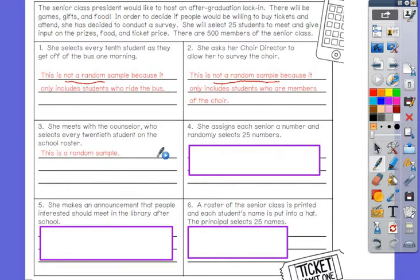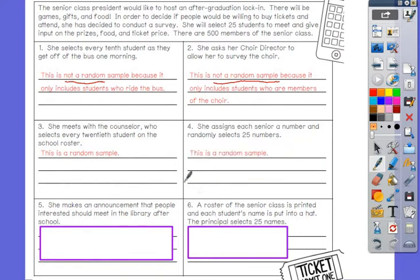Number four, she assigns each senior a number and randomly selects 25 numbers. Could that be an example of random sampling? That would be an example of random sampling because it's at random. Everybody had a fair chance.